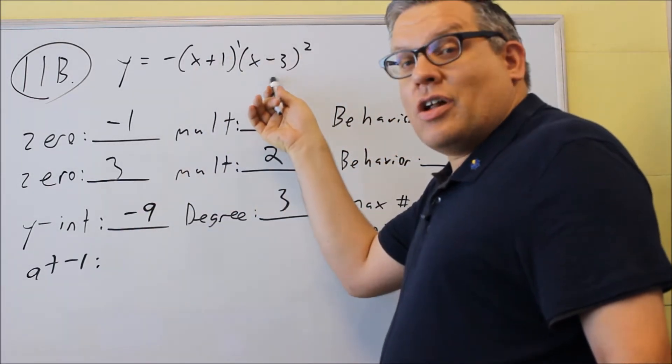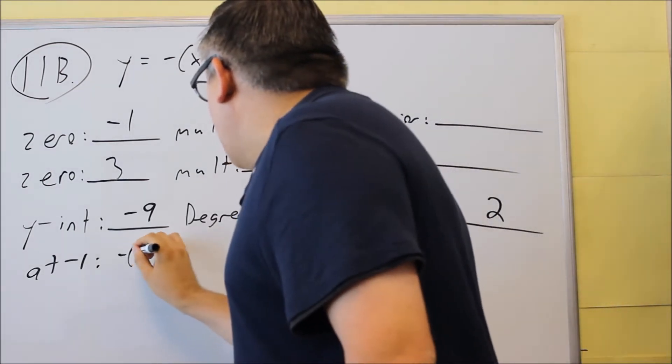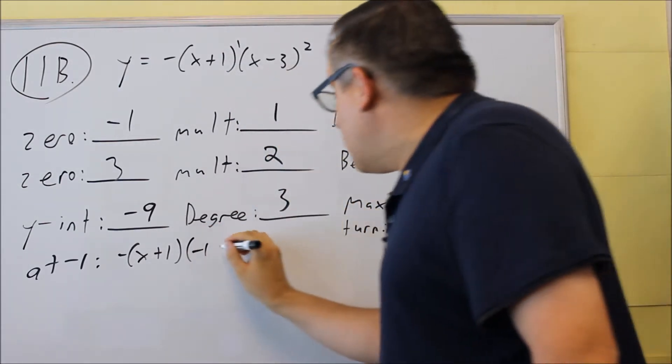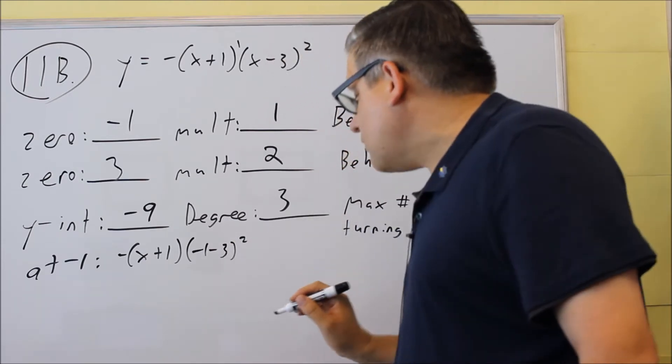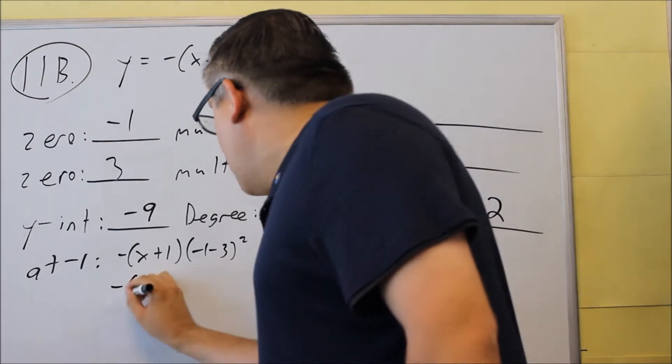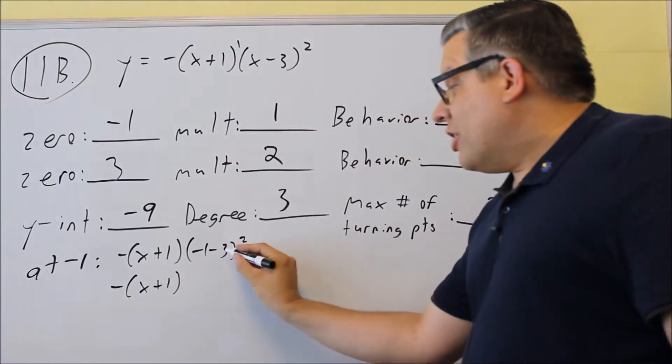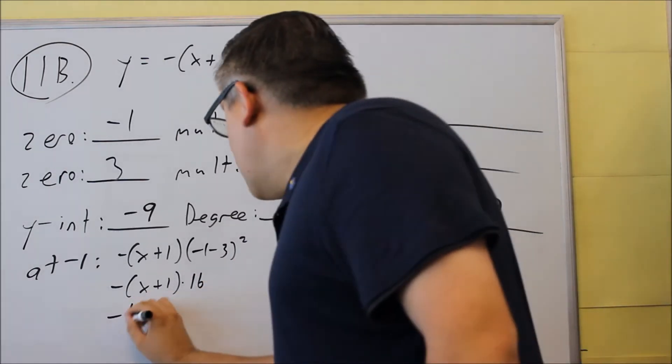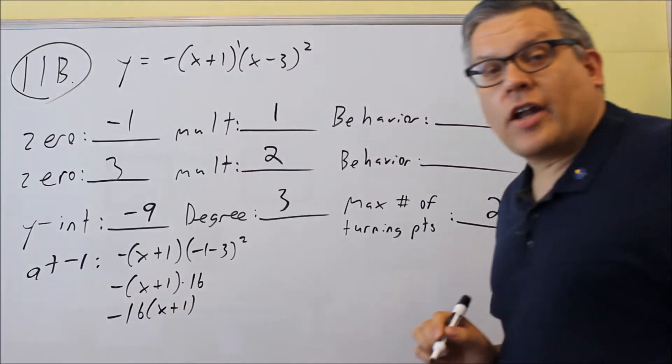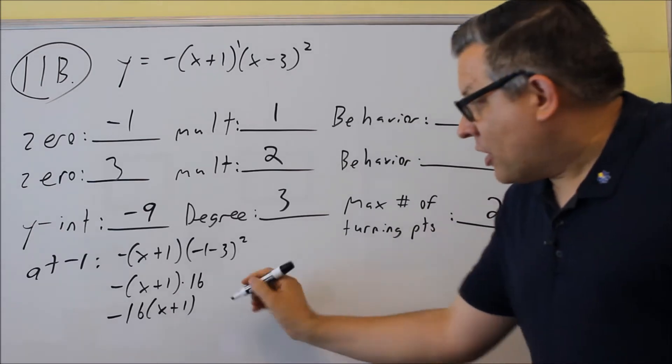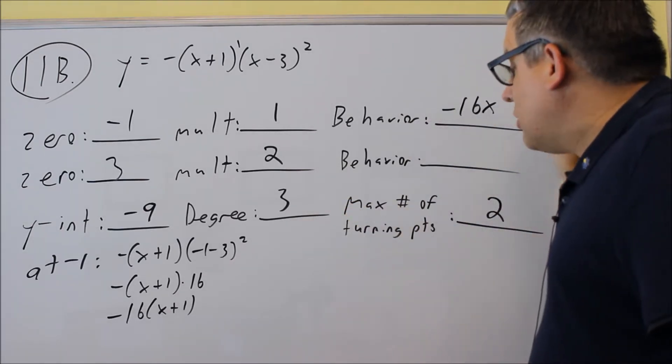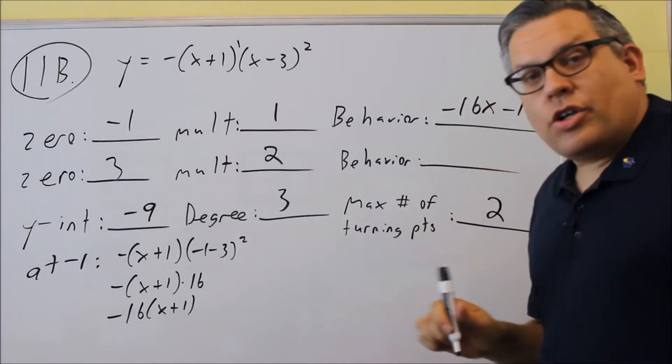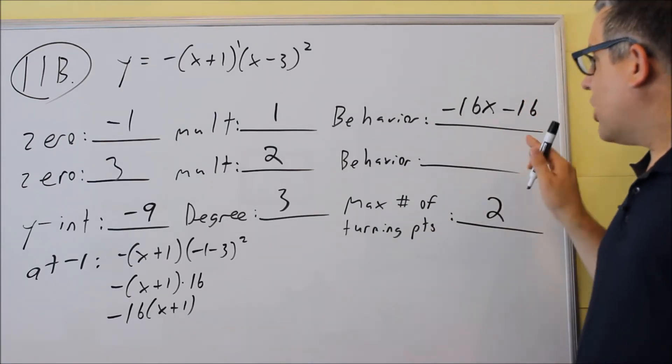So I'm going to put negative one into not the first one, but the second piece here. So I get negative x plus one, and then I'm going to put negative one into the second x here, negative one minus three, and I'm squaring that. So then we're going to do some simplifying. You get negative x plus one. This part here, negative four squared will be sixteen. So if you want to leave your answer as negative sixteen times x plus one, it's okay to leave it like that. If you'd like to multiply that out, sixteen x minus sixteen would be the behavior. Either answer is fine.